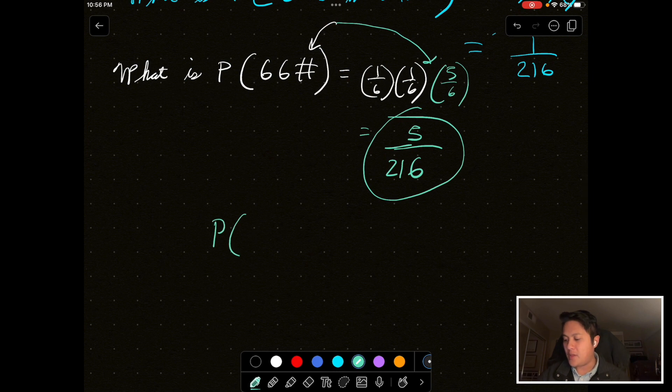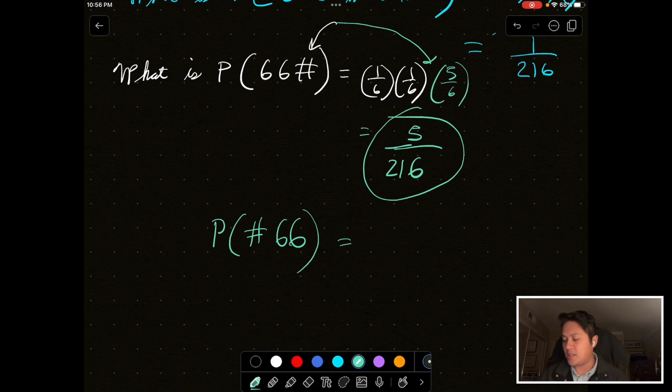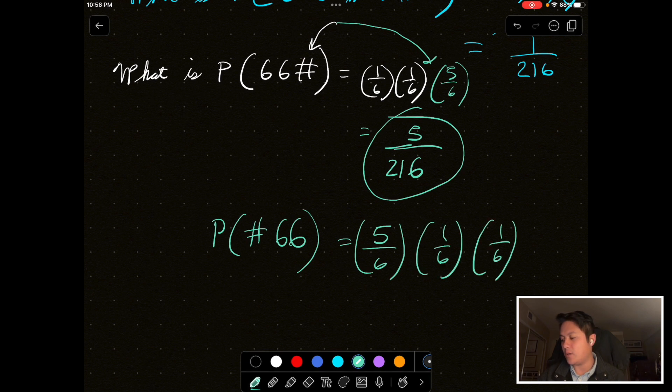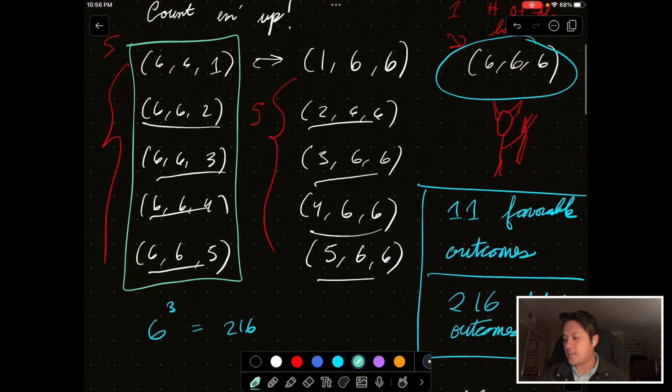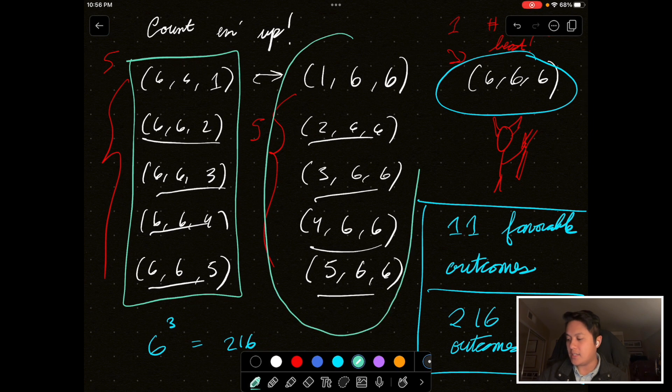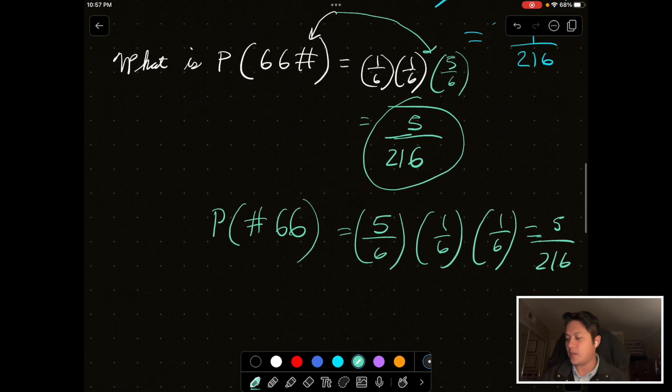And then, if we think of P, let's say number besides six, then 6, 6, that's just the reverse of what we had up here, right? This is just five over six on the first roll, then one over six, then one over six, which is still equal to five over 216. And that represents this column right there, where we had a number besides six on the first roll, and then two sixes after that.